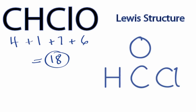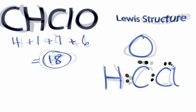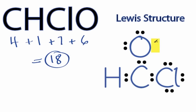We have 18 valence electrons for the CHClO Lewis structure. We'll put 2 between atoms to form chemical bonds — we've used 6 — then we'll go around the chlorine and the oxygen to complete their octets, or until we run out of valence electrons. So we have 6, 8, and 18 valence electrons.